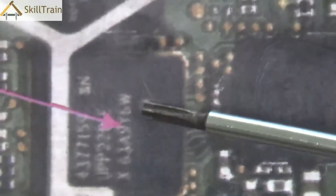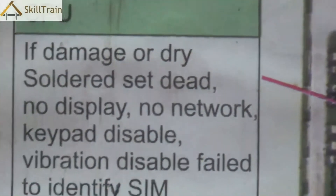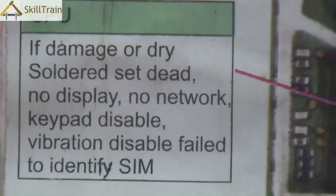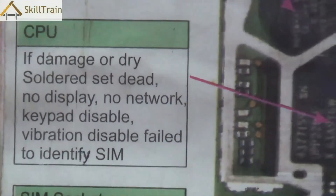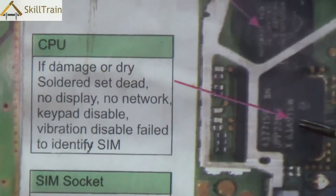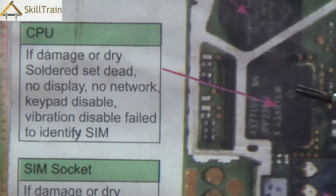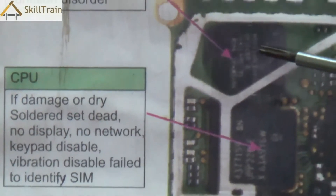Right next to that is the CPU, or central processing unit. This is the main part which controls the entire mobile phone. It gives directions to each of the components on when and what action needs to be taken. Any problem in the CPU can result in problems in multiple components including display, network, keypad, vibration, or even the SIM.